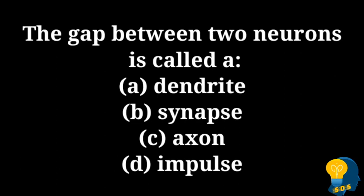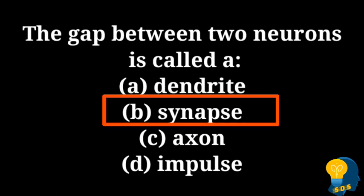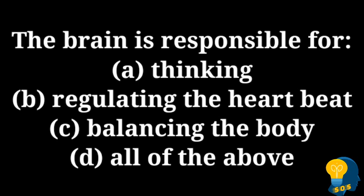The next question is: the gap between two neurons is called. The options are option A dendrite, option B synapse, option C axon, option D impulse. The correct answer is option B, synapse, because the synapse is the gap between two neurons. There are millions of neurons in our body, and between two neurons there is a small gap, and that gap is called a synapse.